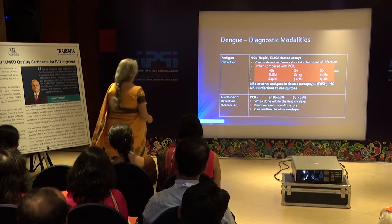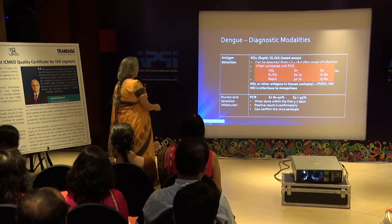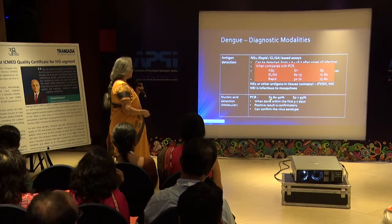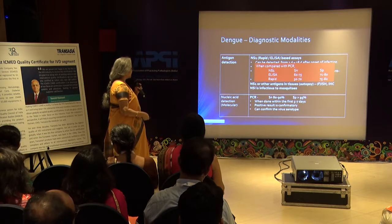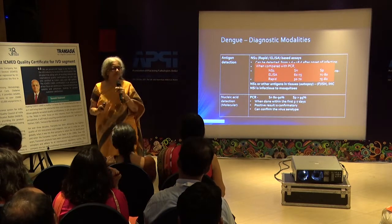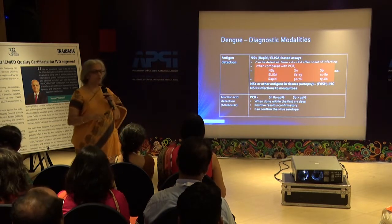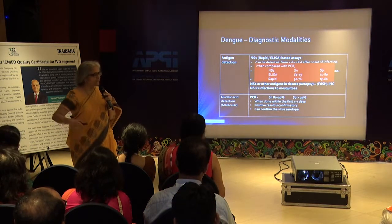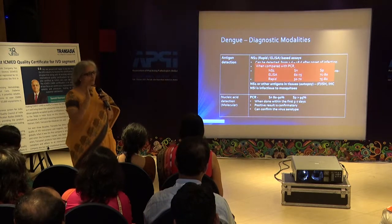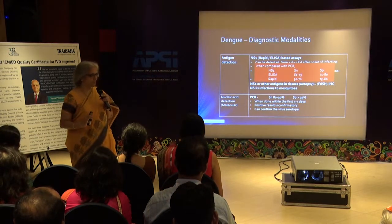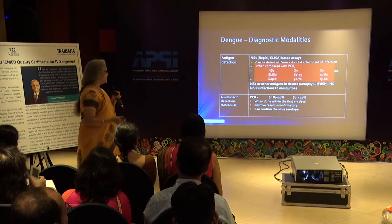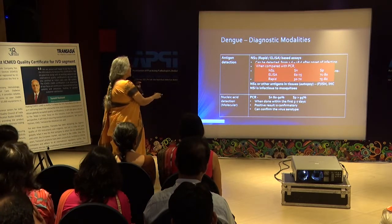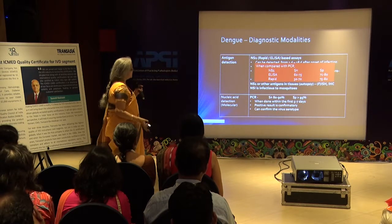The nucleic acid amplification test has sensitivity around 90% and specificity more than 95%, but it must be done within the first five days of illness. Don't do it later and then say PCR is negative so the patient doesn't have dengue — after five days its negative predictive value is essentially zero. Within the first seven days, sensitivity is approximately 90% and specificity 95%, meaning you can still have patients with primary dengue who test negative.